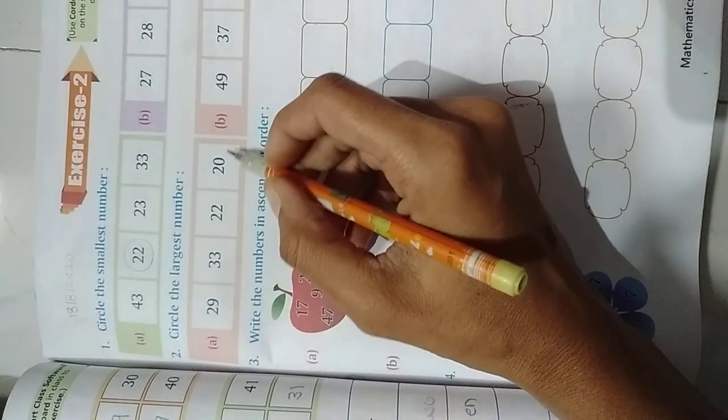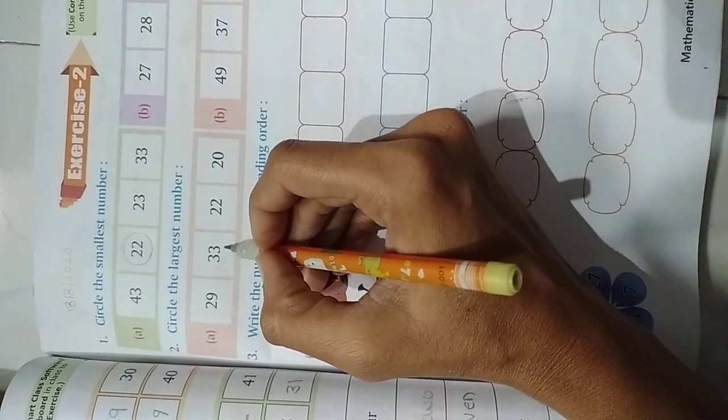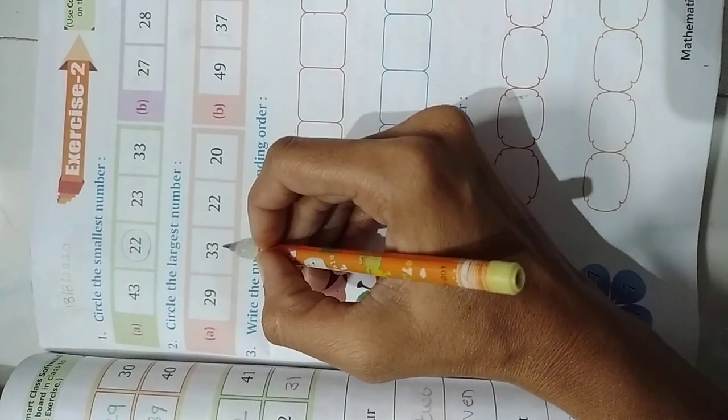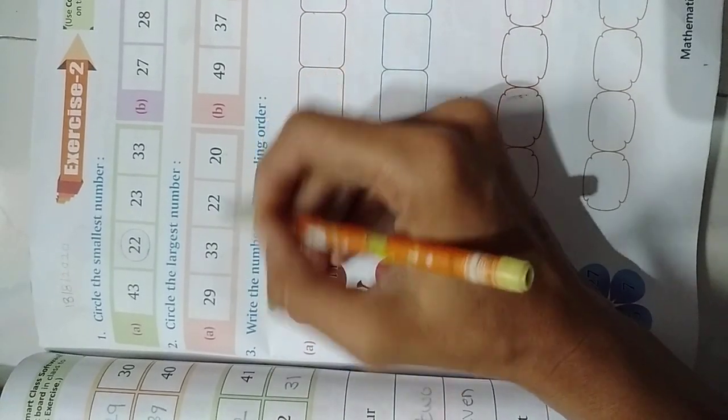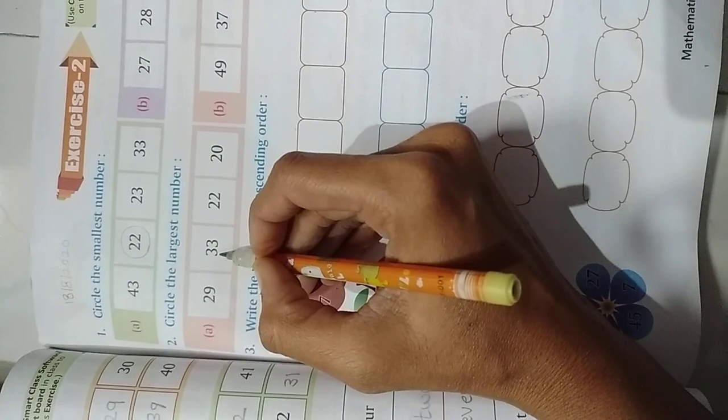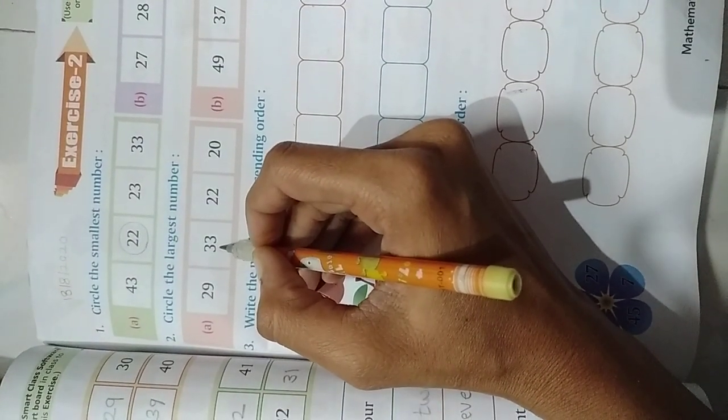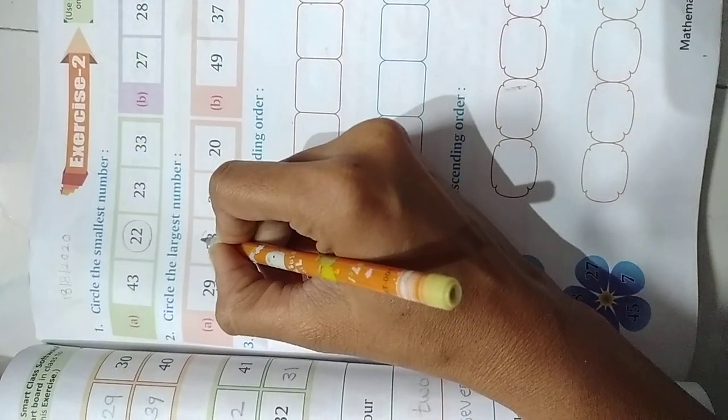Now which 10s place is big here? 3 right. And 1s place is also 3. Anyone is greater here? 9 is greater. But 10s place is small than this one. That means 33 number is largest number. So we need to circle it.